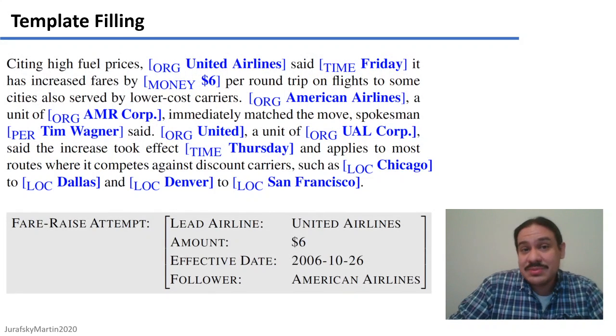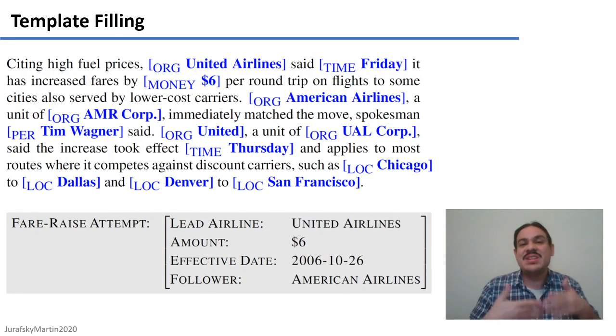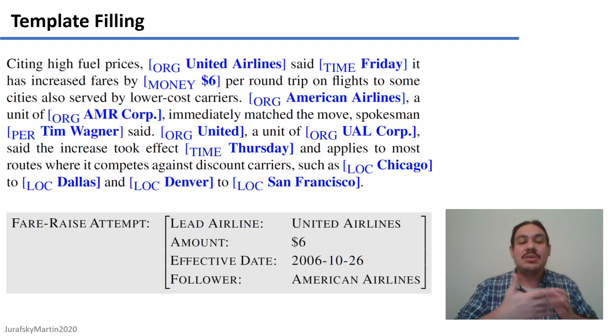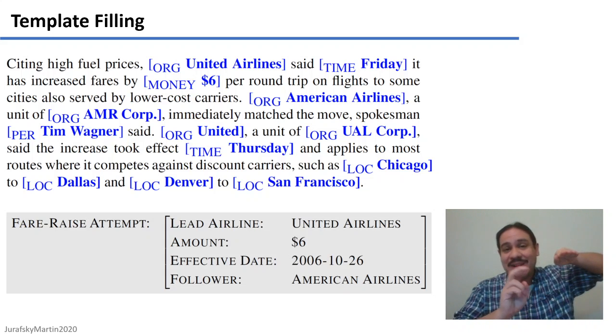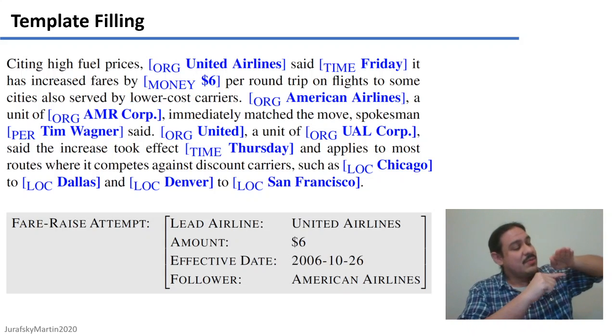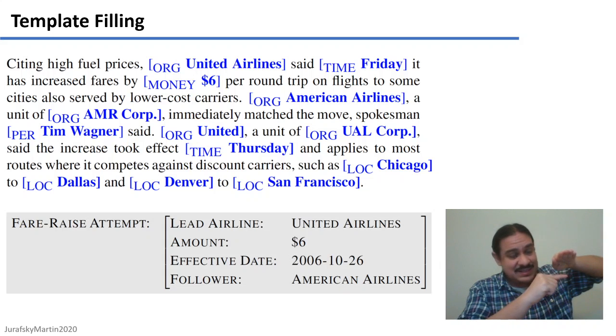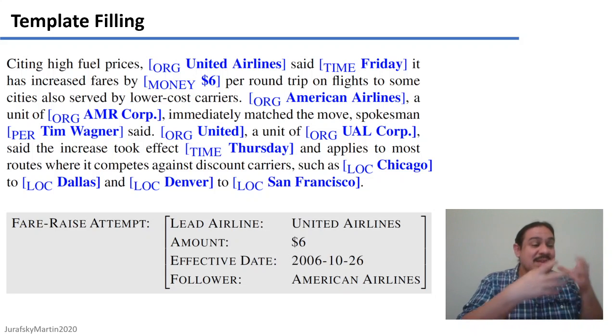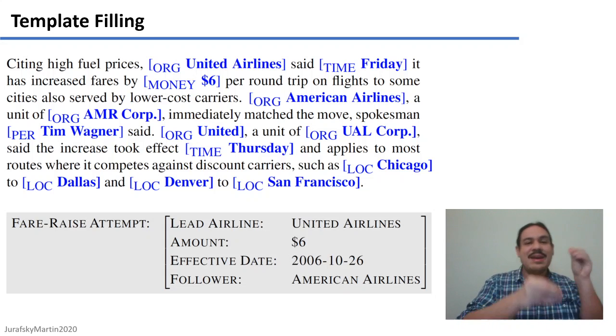We can use these types of regular expressions to then fill out a template. Let's say you're interested in trying to get information on airfare raises from the text of newspapers over the years. You could have an entity, which is a fare raise, and the entity would have different attributes. For example, there will be an airline that has the fare, how much they raised the fare, what the date was, and whether there were any other airlines that followed. And of course, going through newspapers through the years, you're going to find many of these entities, so that you can fill out the template and have the information that you need.